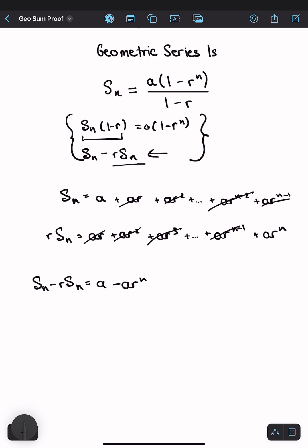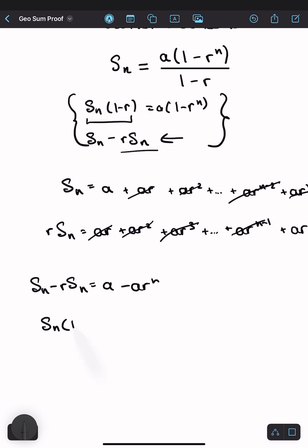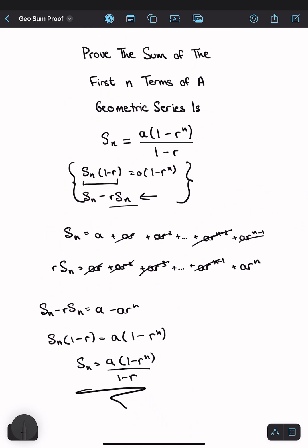Now I can just reverse what I've done in my first step. Factorize out S_n. So I have S_n times 1 minus r and I can factorize out the a here, a times 1 minus r to the n, and divide both sides by 1 minus r. So I get S_n equals a times 1 minus r to the n all over 1 minus r. And there is my proof done.